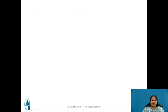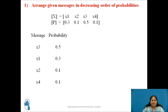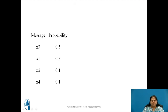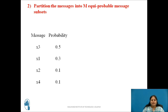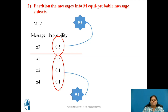Let us solve this following the steps provided. First, arrange the messages in decreasing order of probabilities. We see that x3 has the highest probability 0.5, and x2 and x4 have the lowest probability 0.1. After arranging, we get x3 at the top and x2 or x4 placed at the bottom. Step 2: partition messages into m equiprobable subsets. Here m equals 2, so we divide into two parts such that the difference between the sum of probabilities of these two subsets is minimum. The sum of probability of the first subset is 0.5 and the sum of probabilities in the second subset is also 0.5 — both are equal.